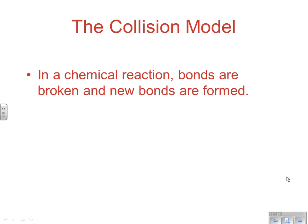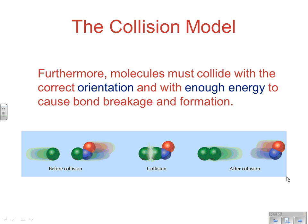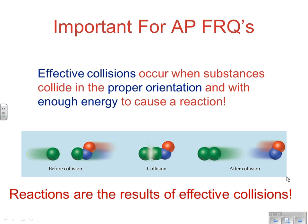In a chemical reaction, bonds are broken and new bonds are formed. Molecules can only react if they collide with each other — the reacting species have to be at the same place at the same time. Furthermore, molecules must collide with the correct orientation and with enough energy to cause bond breakage and formation. So it's not enough just to collide; you have to collide with the right orientation and with enough energy. This is an important note for AP FRQs.